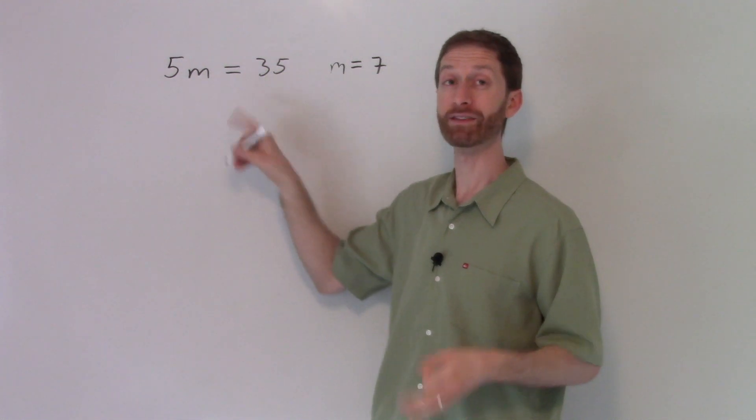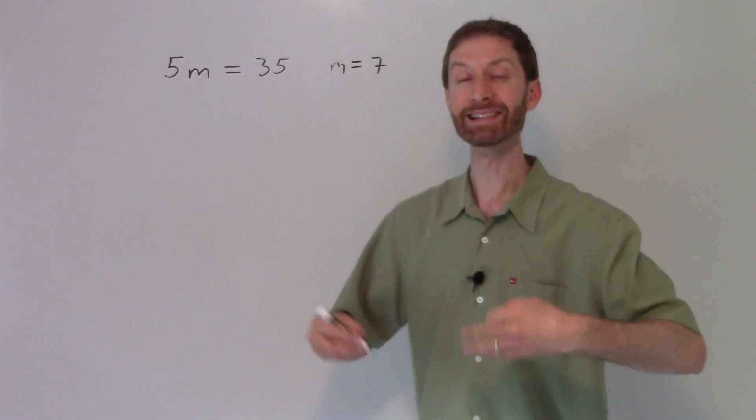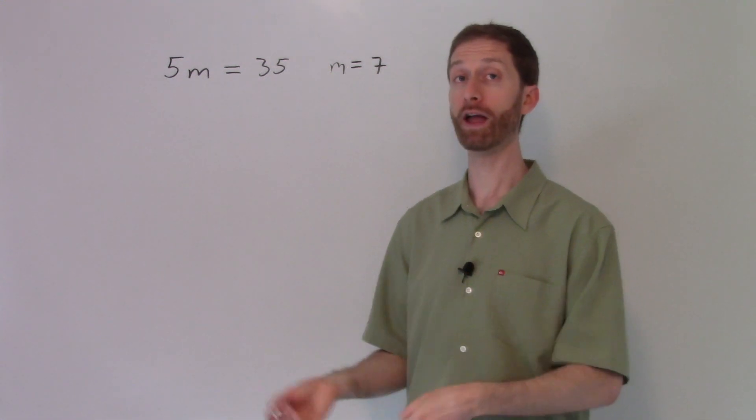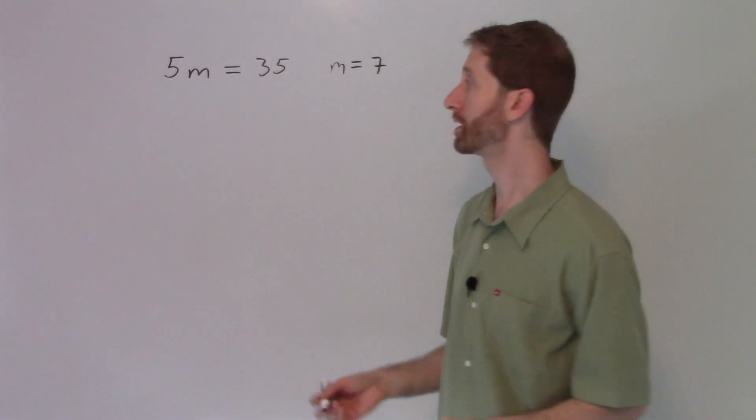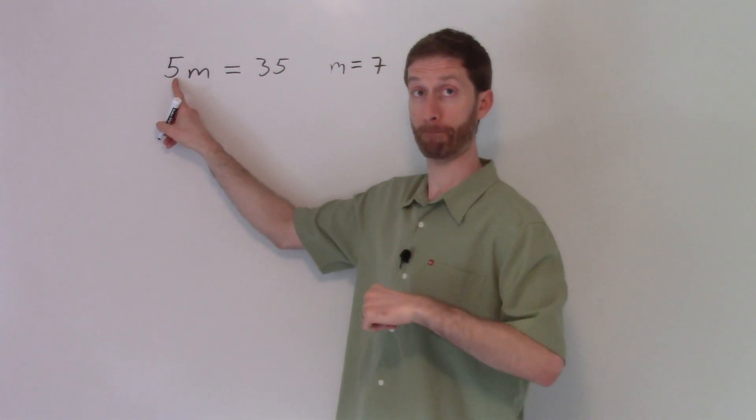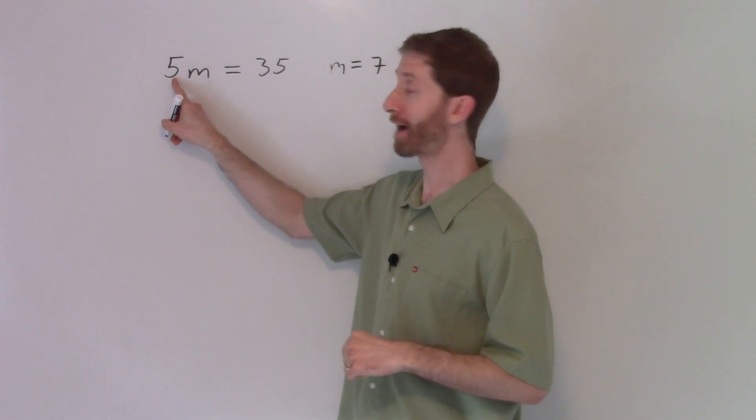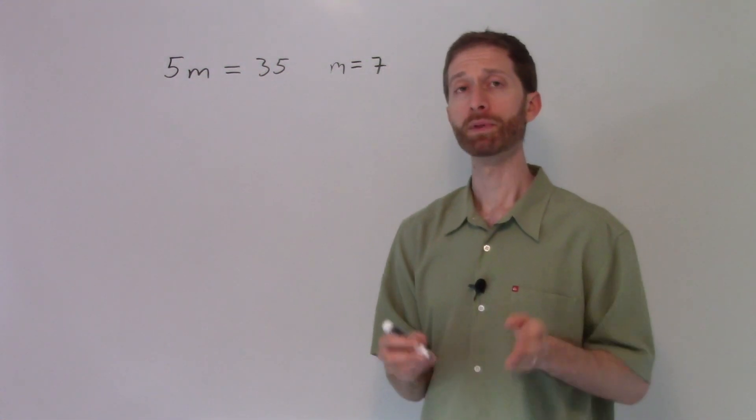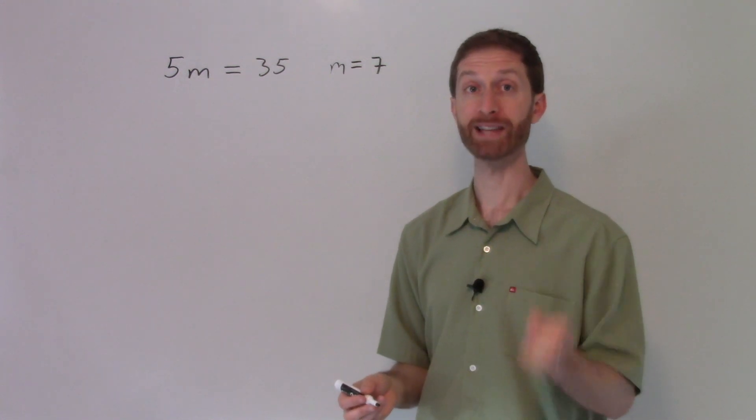That is literally the definition of division. So it makes sense that we would divide to solve for m. The way I like to think of it is what undoes the operation that is being done to m. Well, currently it's five times m. And I realize it might not look like that because it's a five right next to the m. But that is another way of saying five times m.